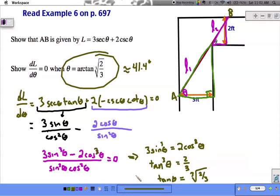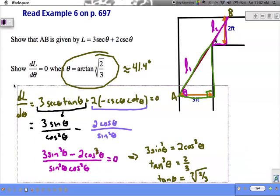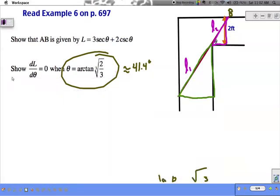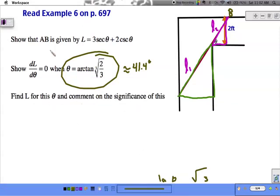So what we now need to look at for the last part of this problem is what's this mean? What does this do for us? Why do we care? Find L and say what this is really meaning. So if I plug this number back in up here, we end up with L being approximately 7.023 meters, or I guess feet. So just over 7 feet when theta is 41.4 degrees.